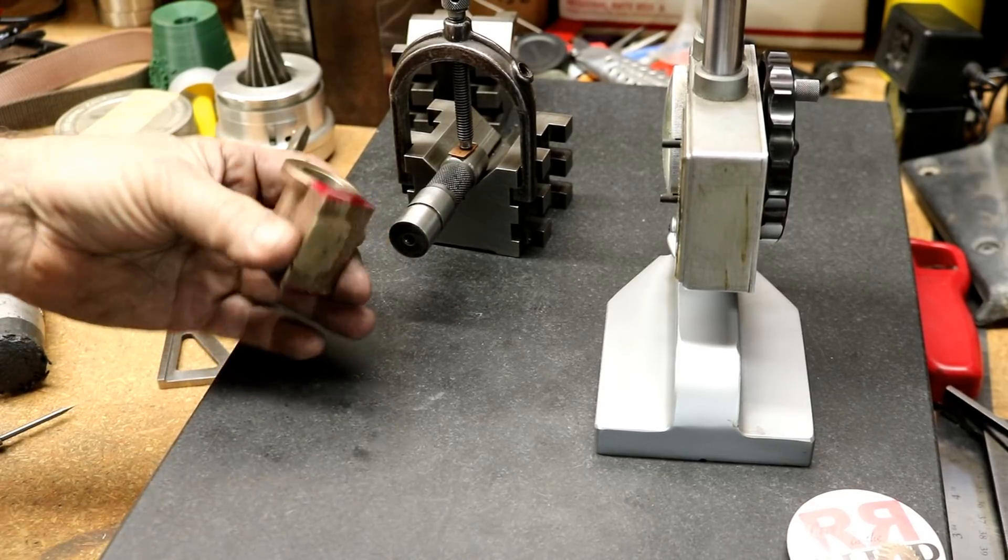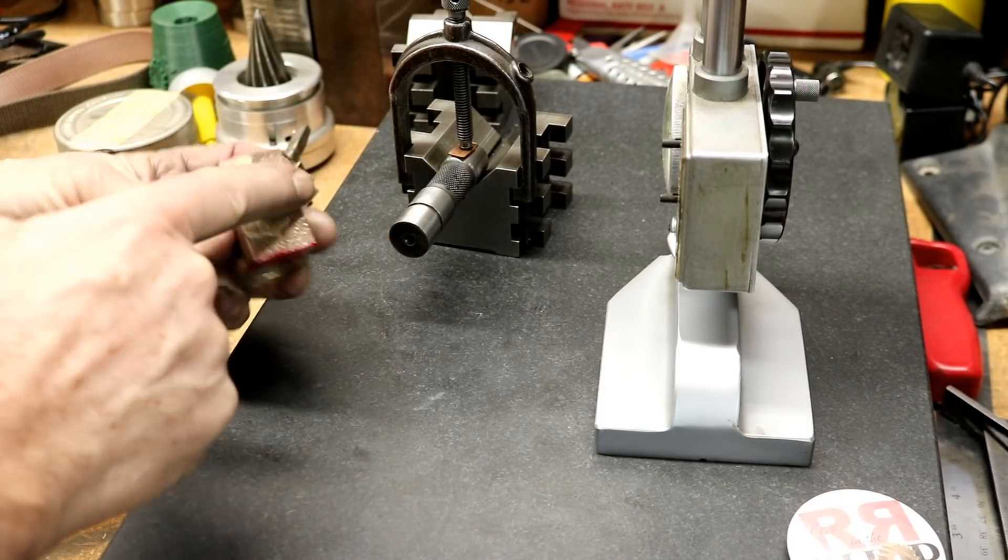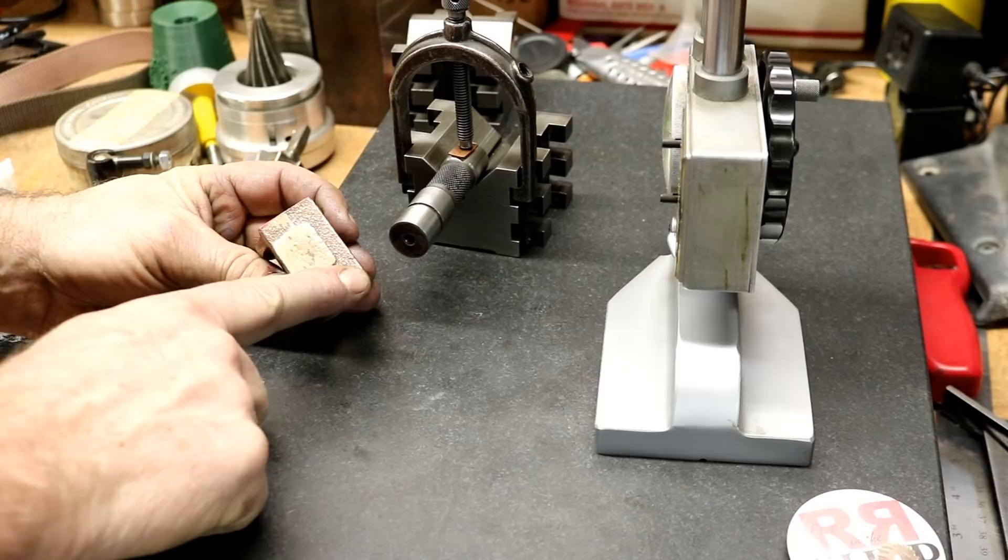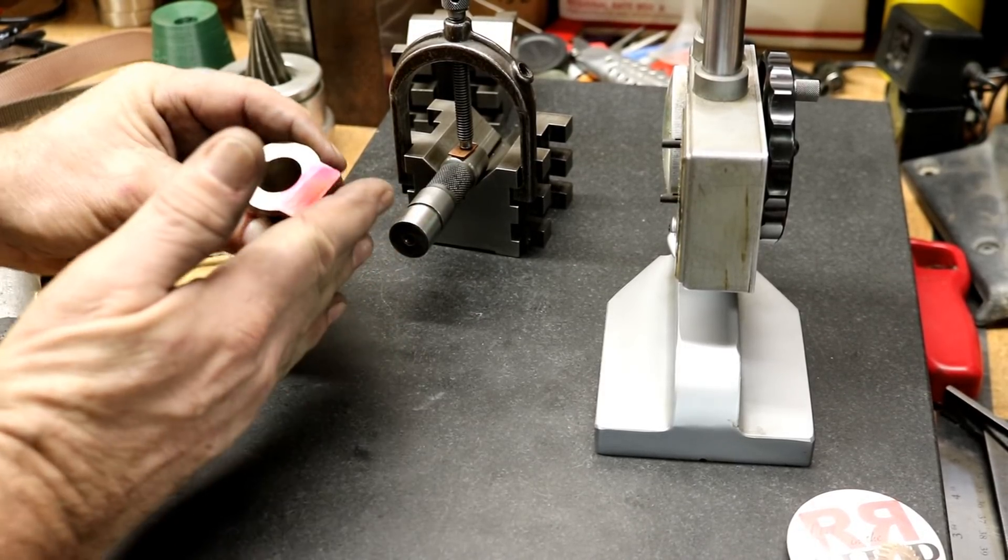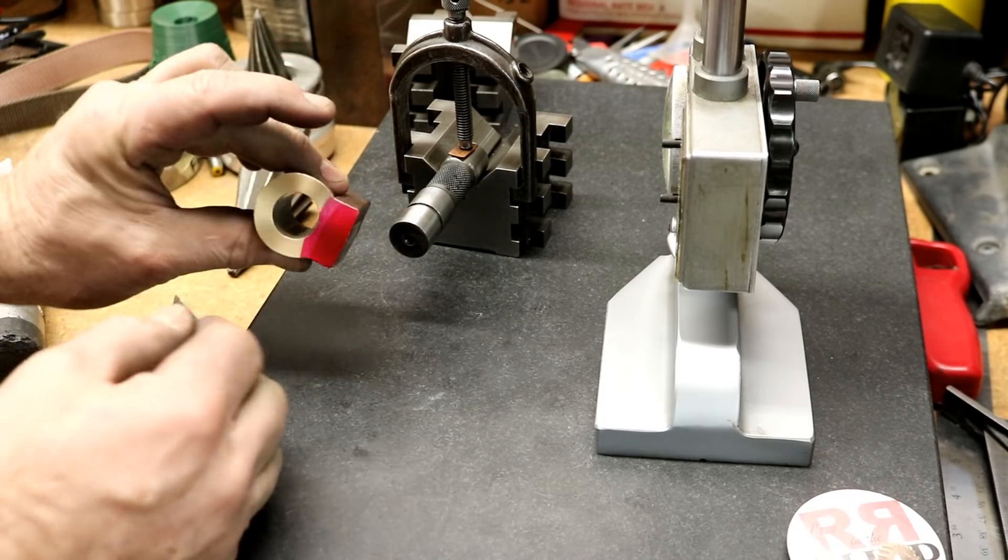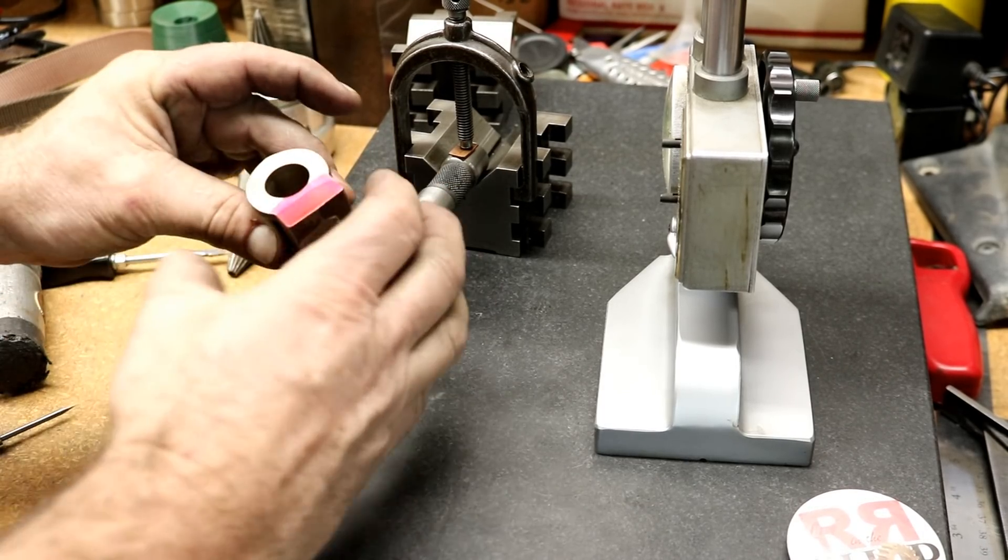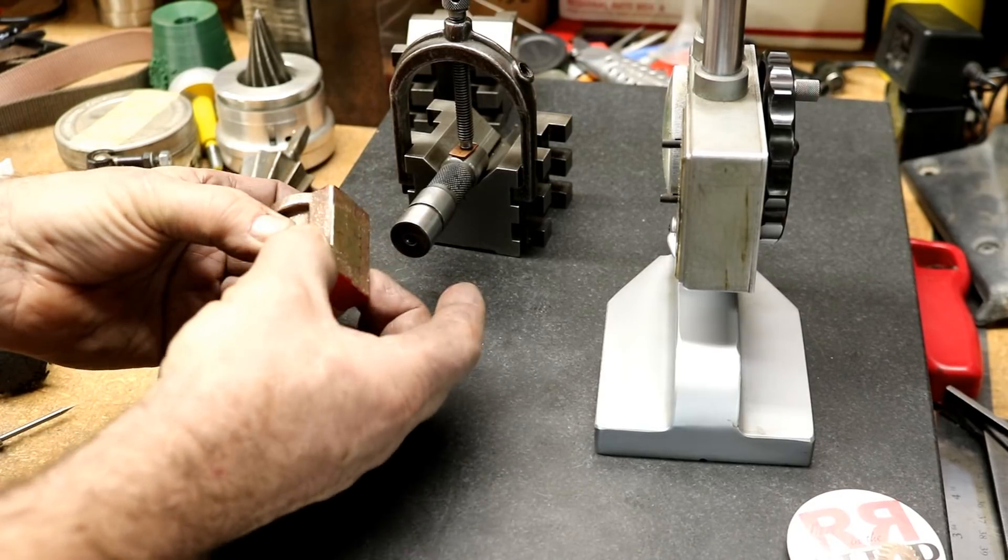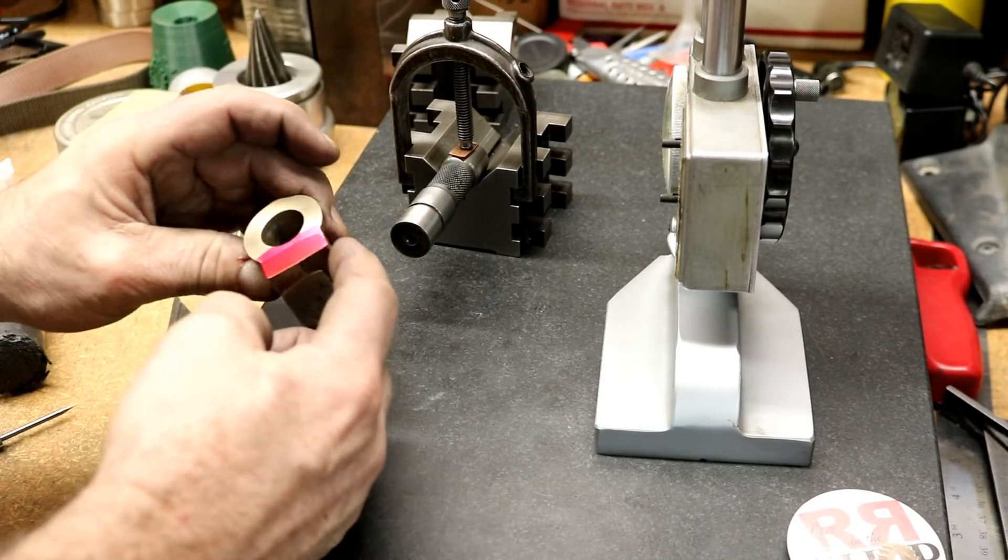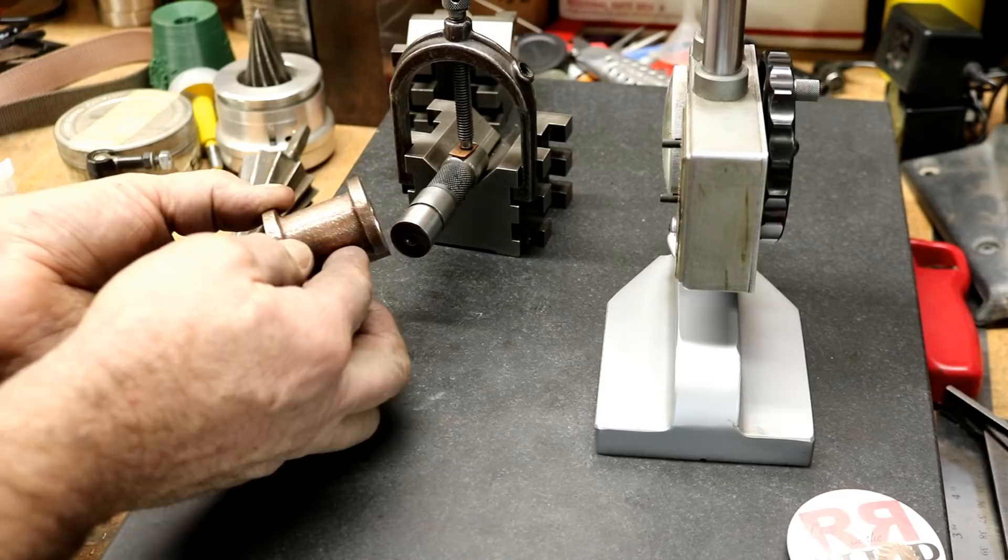We need to mill off this surface here and I want it to be squared up so that when it's on the engine it looks nice and square. There's no square or straight sides to gauge on, it's all rough casting.